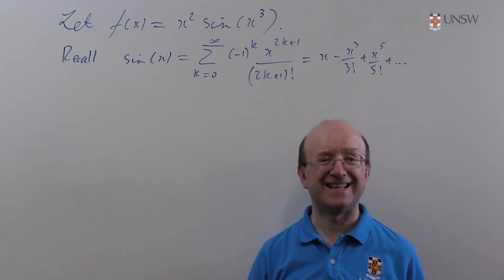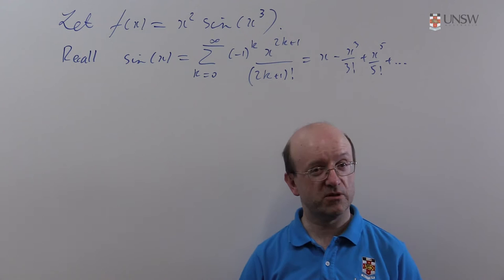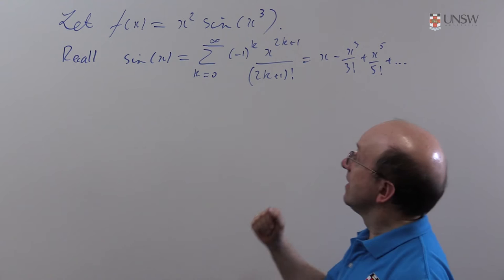We're going to firstly write down the McLaren series, that's the Taylor series about zero, using the series for sine, which is a series you ought to know. And then we're going to look at the critical point zero.